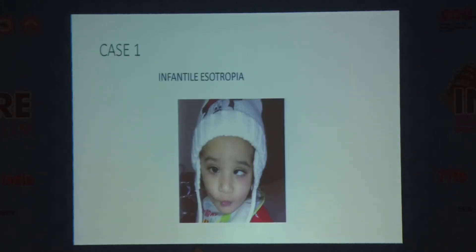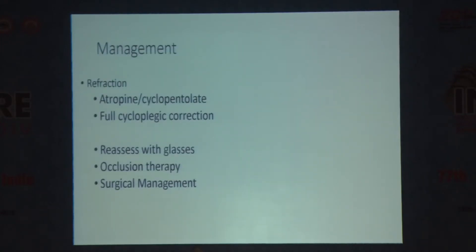Let's look at a case. A young child about eight months old presents with esotropia. We do a cover test and confirm it's a true esotropia. We do a refraction and find only about a plus one or plus 0.5, which made no difference to the squint — as we'd expect, since that's the normal refraction for a child this age. As he was alternating freely, there was no amblyopia requiring occlusion therapy first, so we proceed toward surgical management.